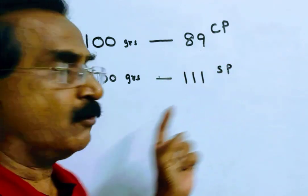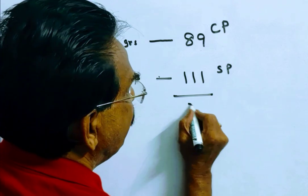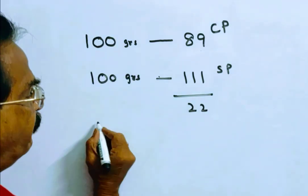This is cost price. This is selling price. Profit is 22. Then, profit percent.